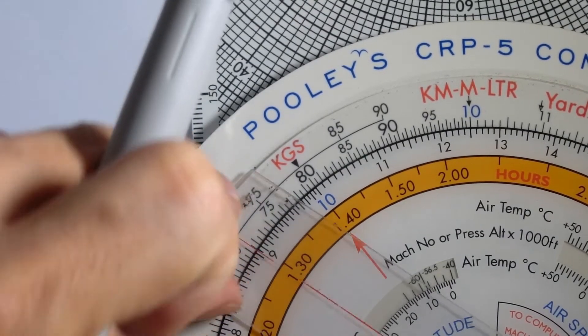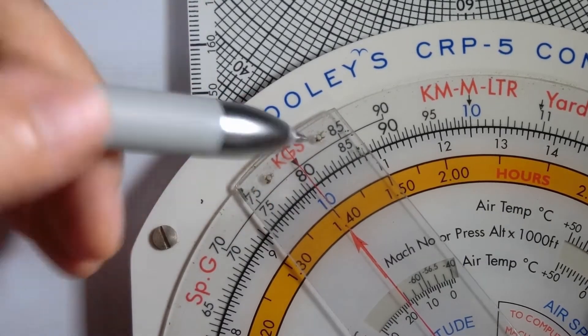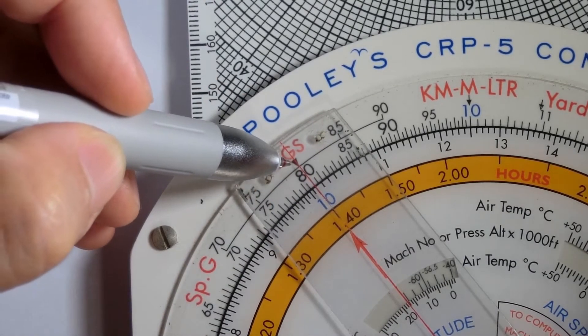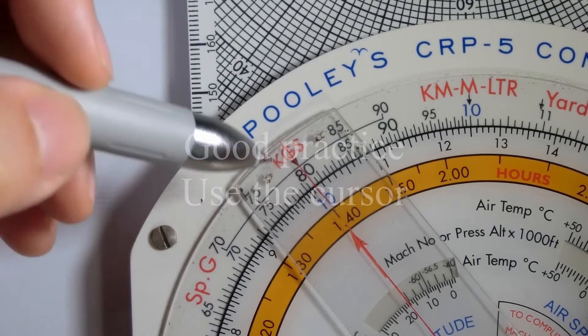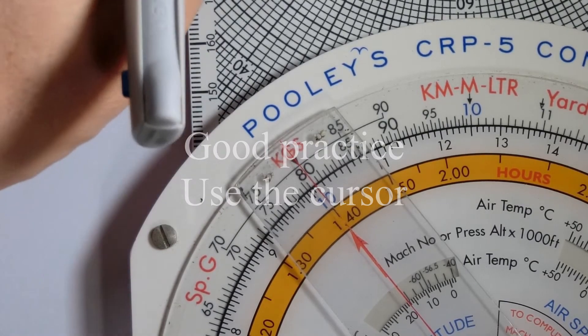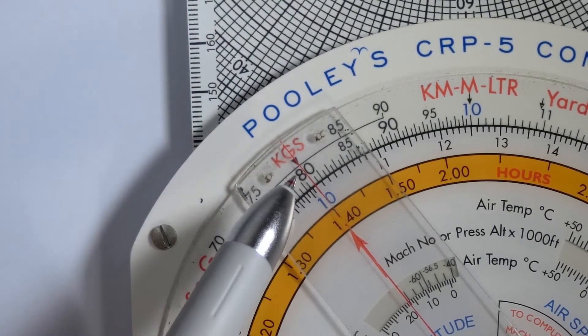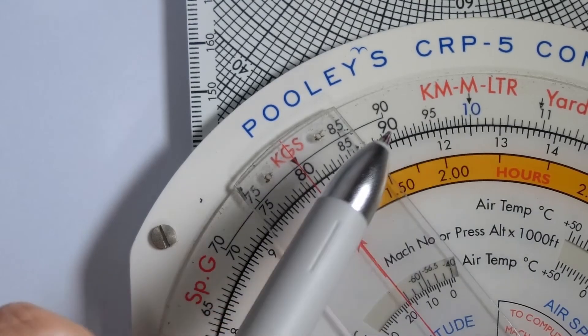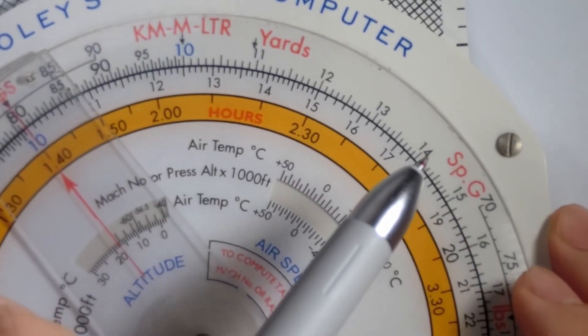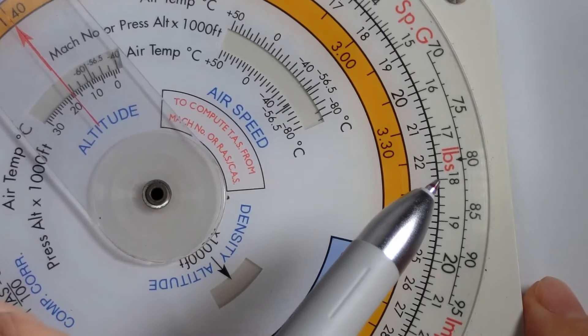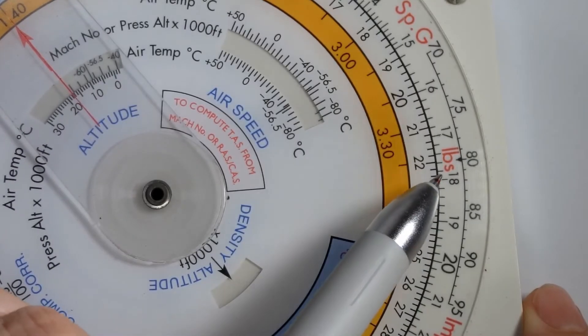Just to be sure we've got it lined up, we can put the cursor on it to check that one kilogram is aligned. Then, without moving any of the scales, we're going to go along the outer scale to look for our conversion units for pounds. And we find pounds right here.